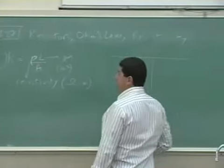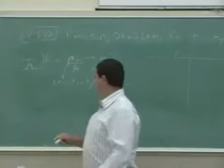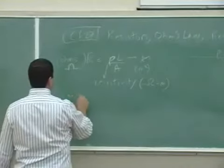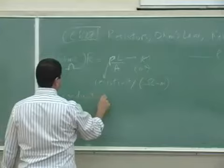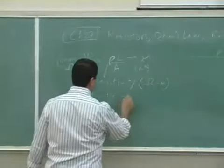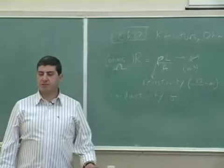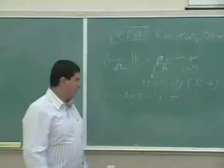And there is another constant called conductivity, which they use the Greek symbol sigma. And the conductivity is simply one divided by the resistivity.